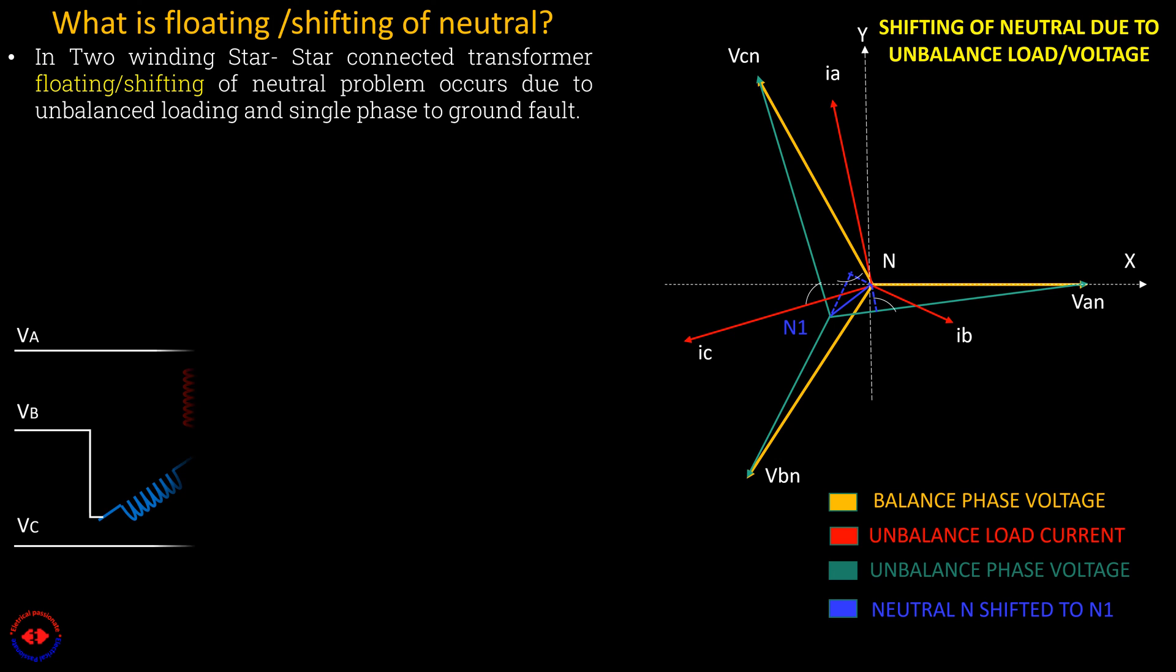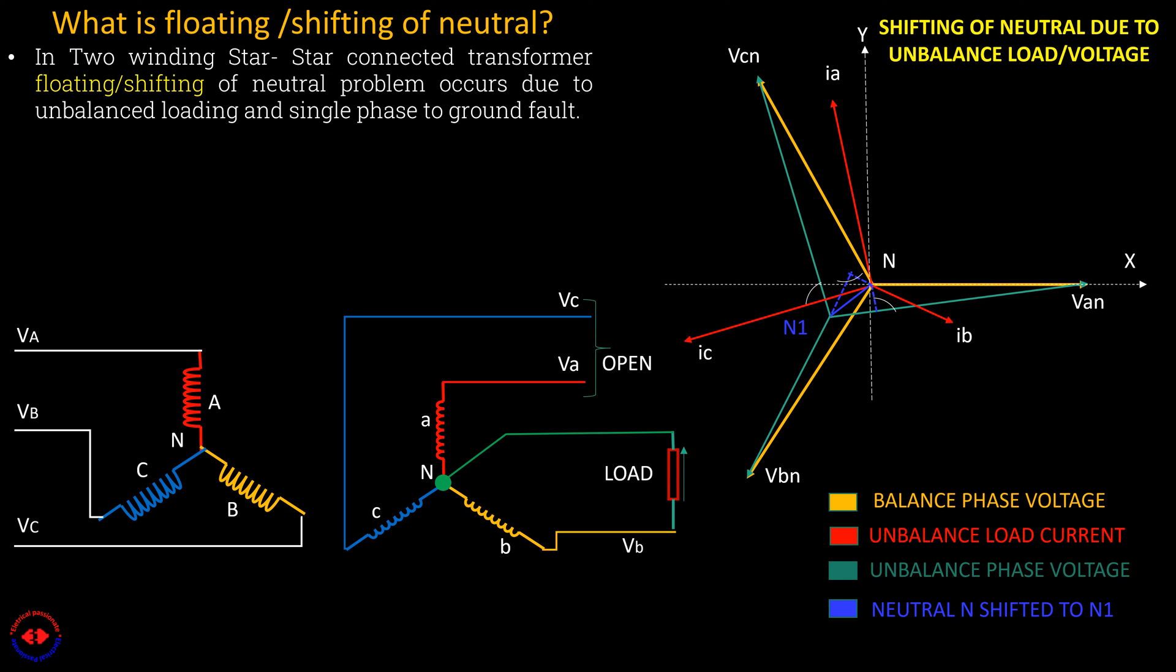Let us understand how neutral shifting occurs. A load is placed between B phase secondary and neutral. Now the load is being supplied by B phase primary. The primary winding B cannot supply required power because it is in series with primary winding A and C whose secondary winding is open circuited, is to be assumed.